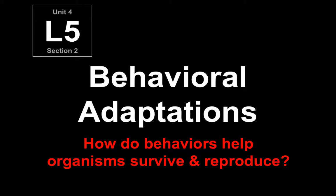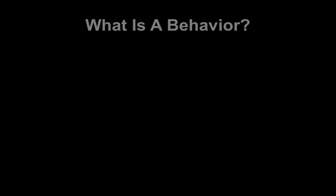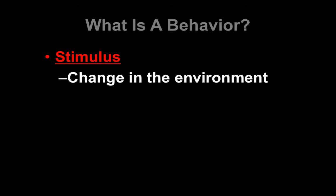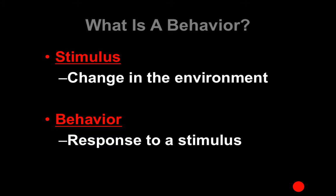In this lesson, we're going to look at how behaviors help organisms survive and reproduce. So first we have to answer the question: what is a behavior? Well, first we have a stimulus — that's something that changes in your environment, and that can be a whole lot of different things. And then the behavior is the response to that stimulus.